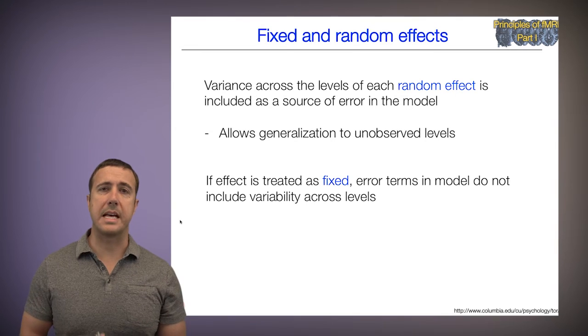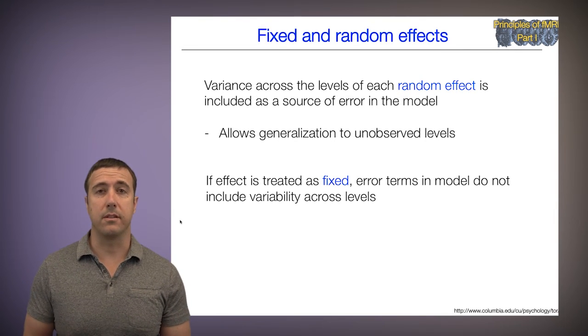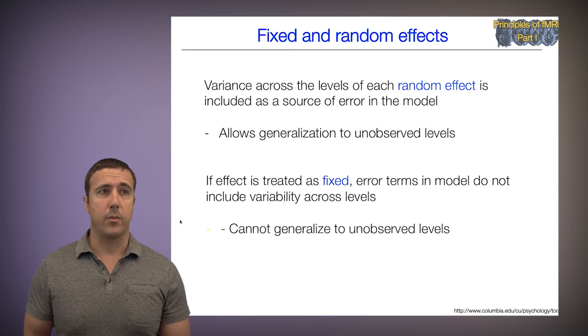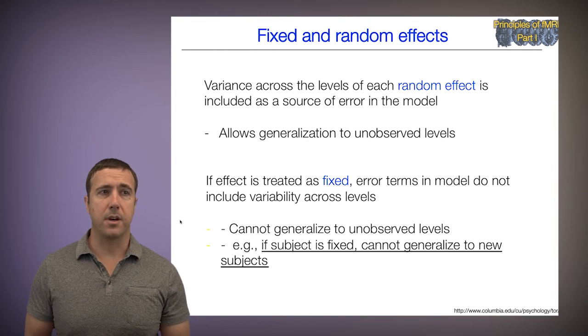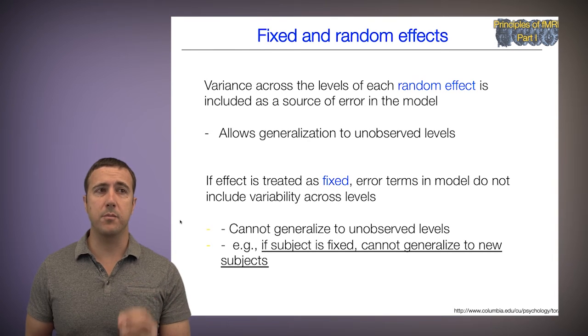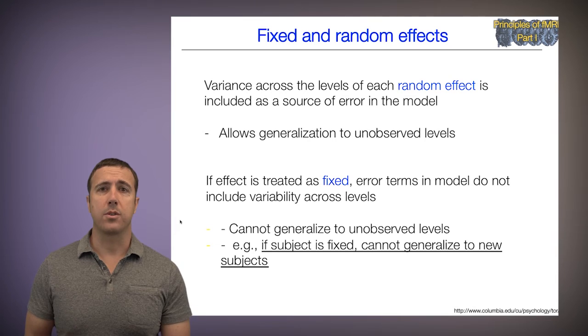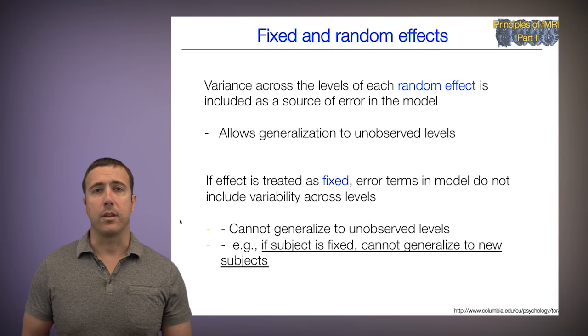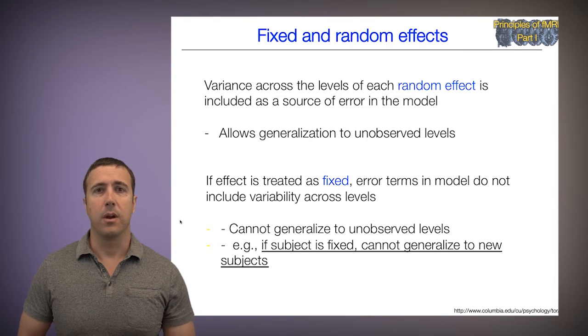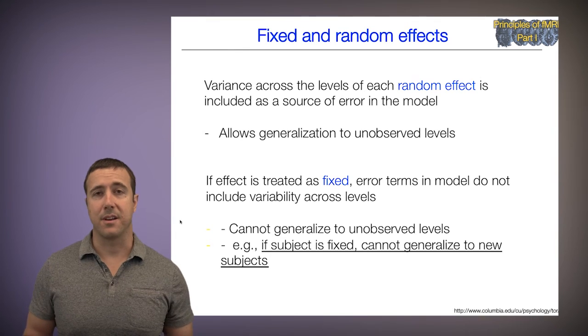If an effect is treated as fixed, error terms in the model don't include variability across those levels. So we can't generalize to unobserved levels in that case. The upshot of this is if I treat subject as fixed, I cannot generalize to new subjects, which is something that we virtually always want to do in science. It's hard to imagine a case where we don't want to generalize to other people besides the ones we actually included in our study. That's science.